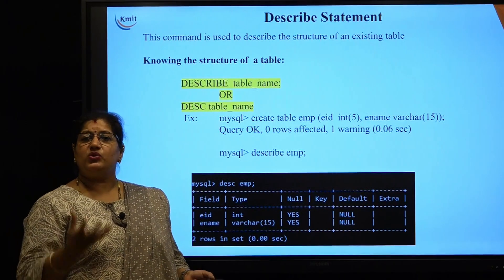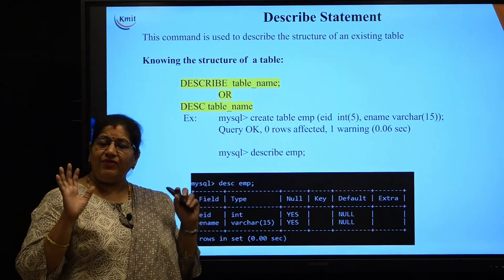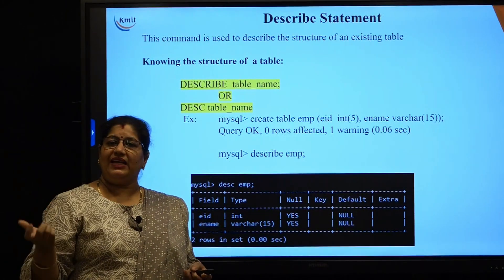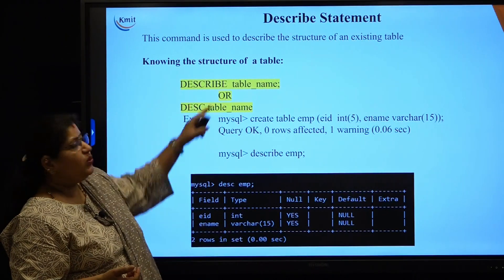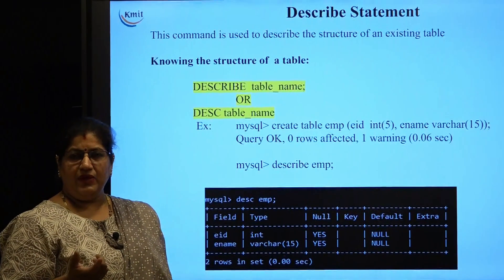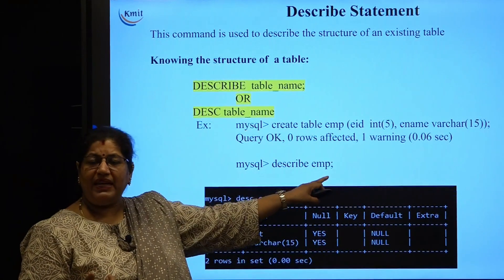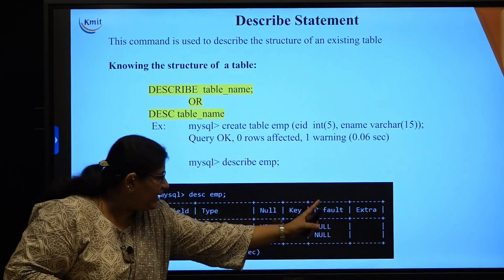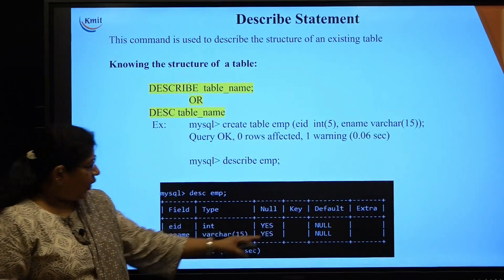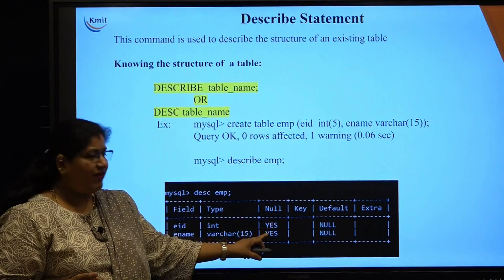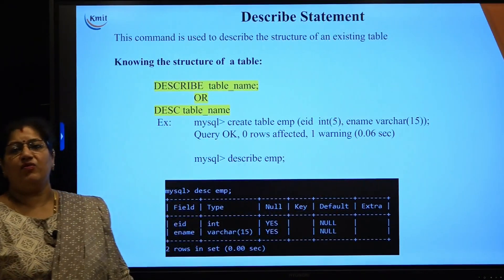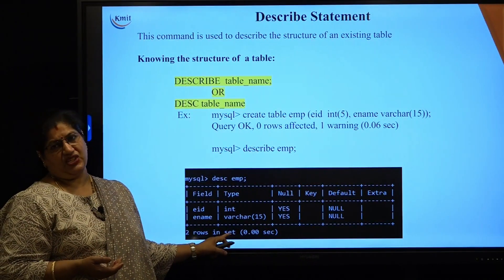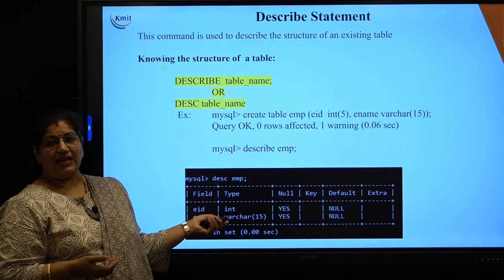The DESCRIBE statement can be used to see the structure of a table. If you want to know the columns, data types, and sizes of a table you have constructed, use: DESCRIBE table_name. For example: DESCRIBE emp. This displays the structure along with key constraints, and whether null values are allowed or what the default setting is.